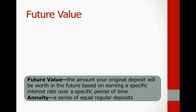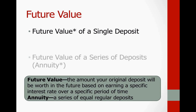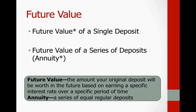This is where we're going to end today. In class, we'll talk about calculating the future value, which essentially is the amount your original deposit will be worth in the future. For example, that $1,000 — we would calculate its future value if we were depositing it in an account earning 8%, and we want to know how much it's going to be worth after five years. There's a drawn-out step process, but we have a chart that makes it easier.